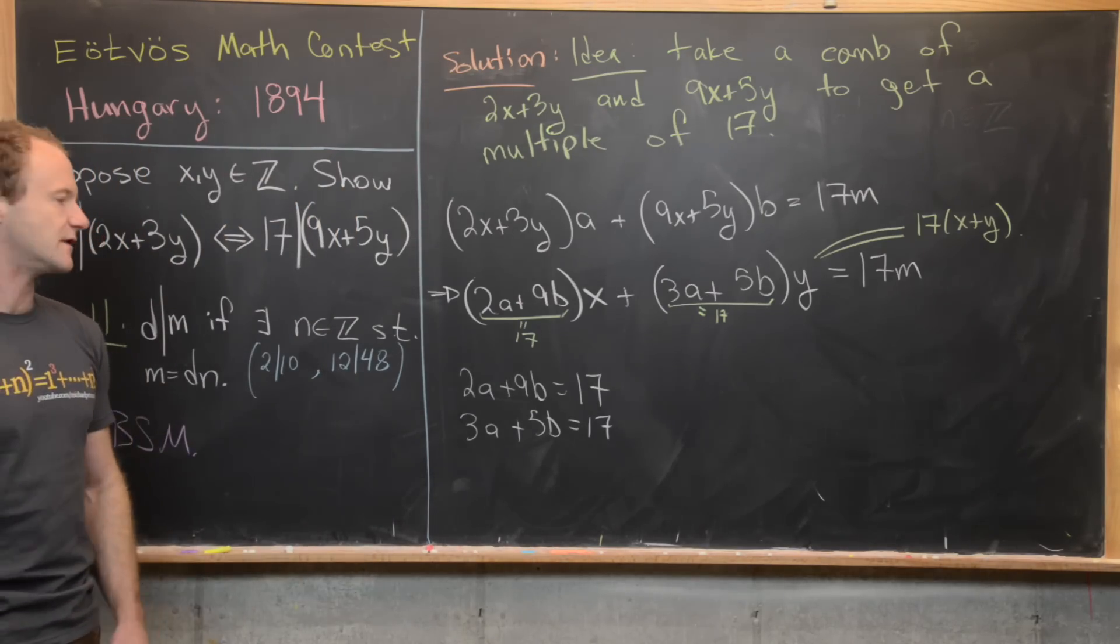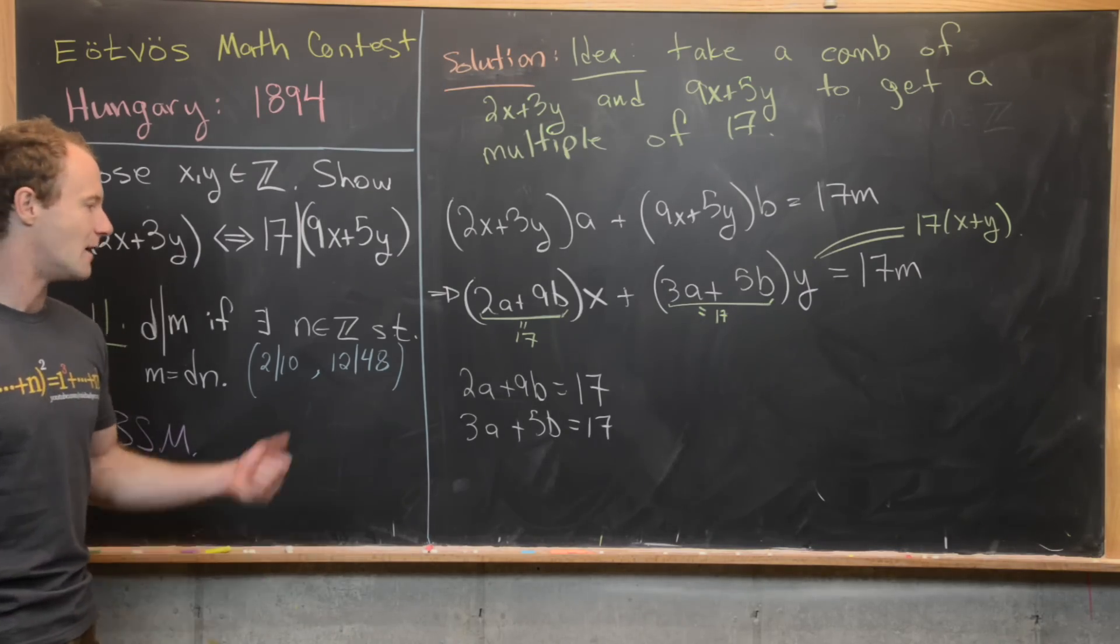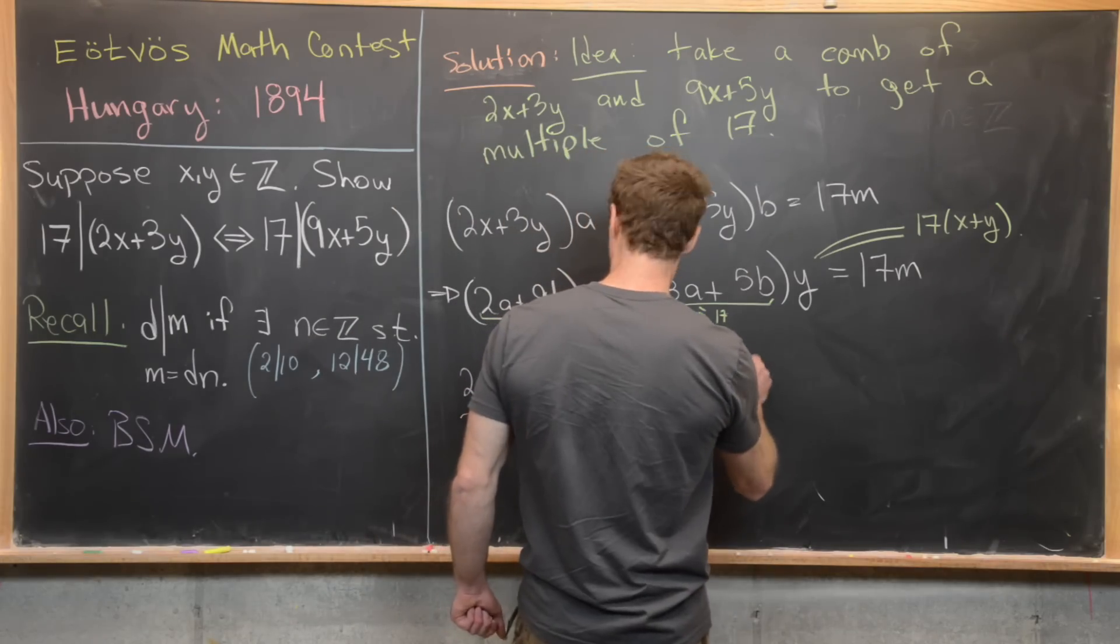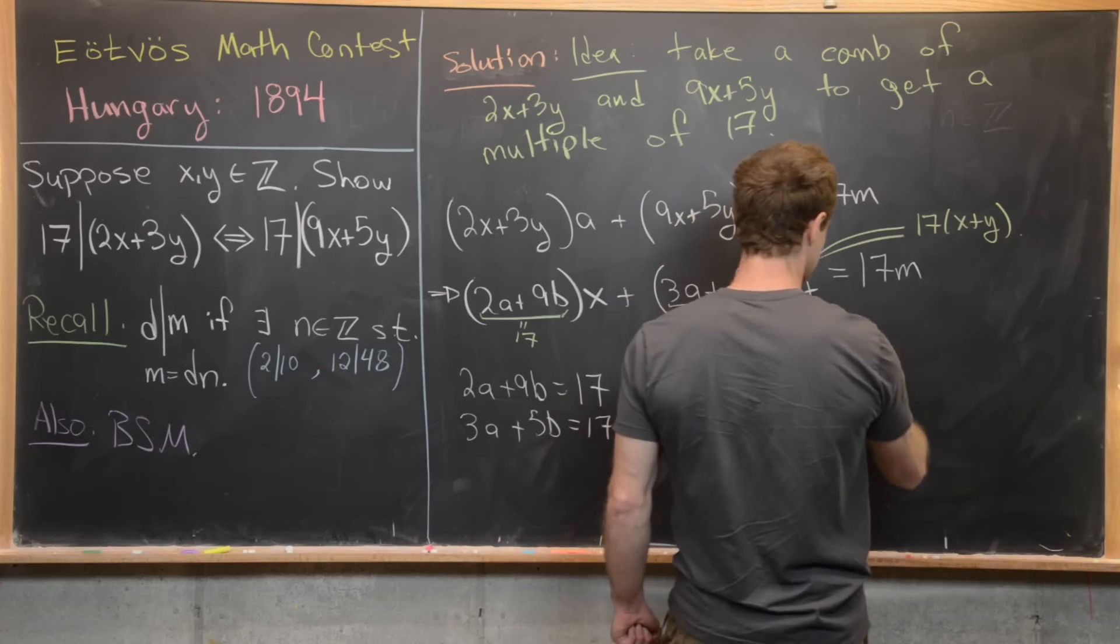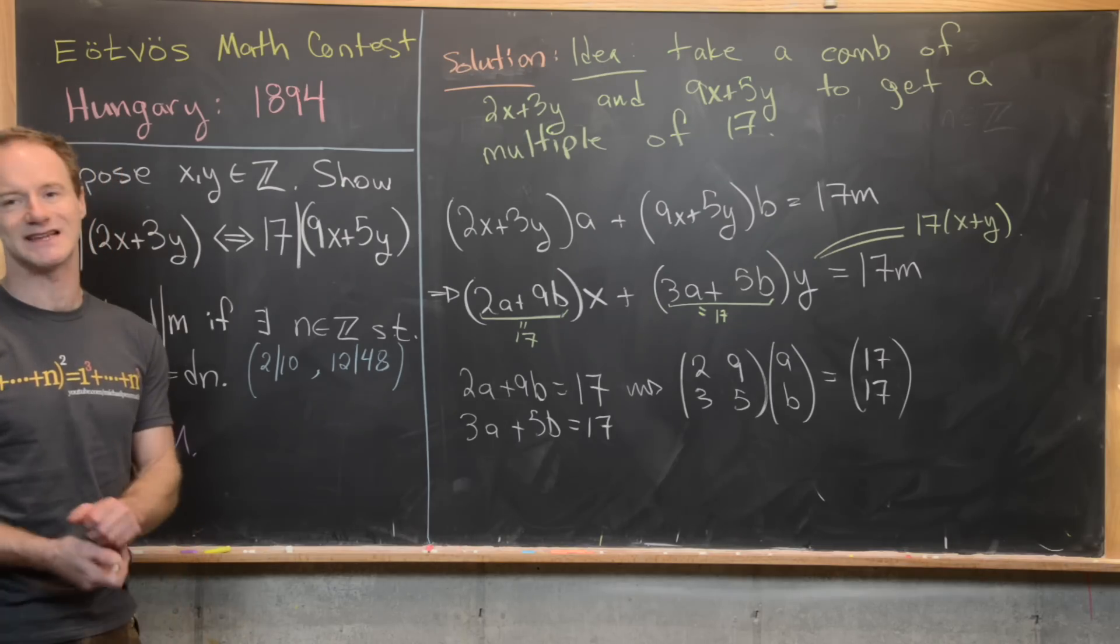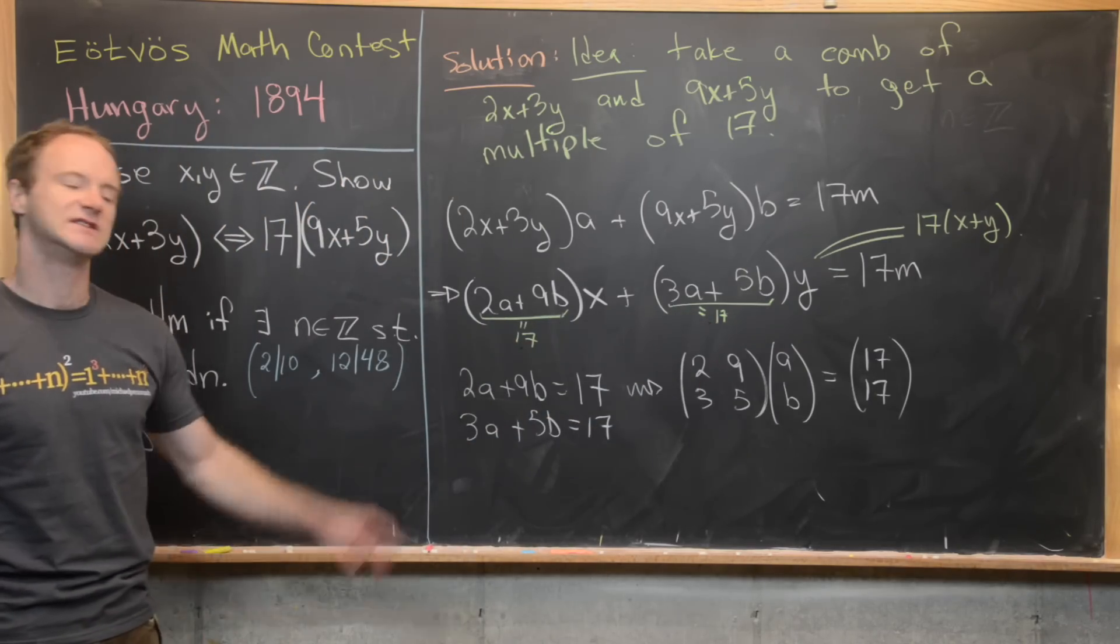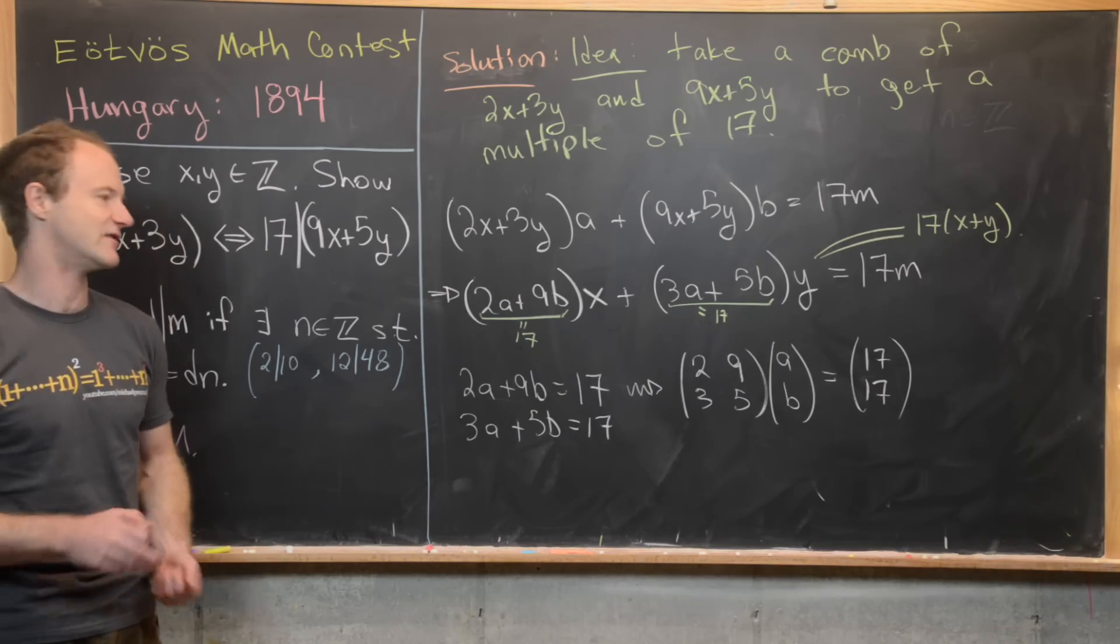Okay, so there's a number of ways to do this, we could put this into a matrix, we could use a substitution method, we could do an elimination method, maybe I'll put it into a matrix. So notice that is equivalent to the following matrix equation. So we have the matrix 2 9 3 5 times the vector ab equals the vector 17 17. And I want to point out that we're going down this road of the best case scenario at this point. Really, all we need is for this to be a multiple of 17 and this to also be a multiple of 17. What we are thinking is that maybe we can make it so that it is the nicest multiple of 17 that is 17 itself.